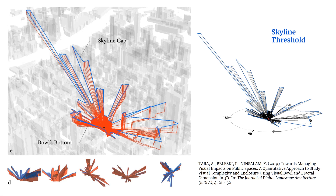I would like to start with referencing our last year's publication in the Journal of Digital Landscape Architecture, in which we studied the form and complexity of the visual bowl as a 360-degree environment around an observer in Melbourne CBD. The visual bowl was conceptualized as a volume and modeled as two entities: the bottom-up bowl and the skyline cap, as the collection of sightlines from an observer to the surrounding visible skyline. The skyline cap or skyline threshold is a key indicator of the visual bowl, and intrusions by vertical elements can dramatically change the visual environment and the experience.